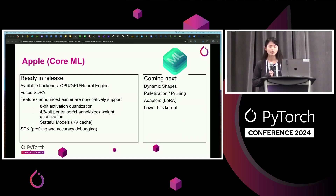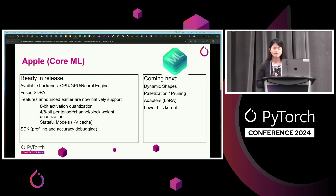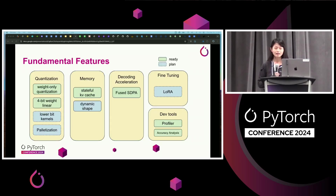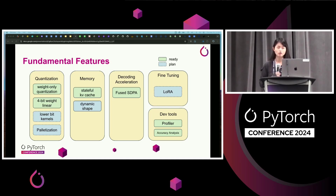We'll start with CoreML, a framework built by Apple to leverage their hardware including CPU, GPU, and Neural Engine. For the CoreML backend, they have enabled the following features, which were announced at the recent WWDC and are now natively supported in ExecuTorch. These features include 4-bit kernels and KV cache for memory management — updating KV cache in memory decreases communication overhead. We also have dev tools to tell us what's going on inside the hardware. Next, the plan is to support more features including dynamic shapes, pruning, lower-bit kernels to further compress the model, and LoRA.